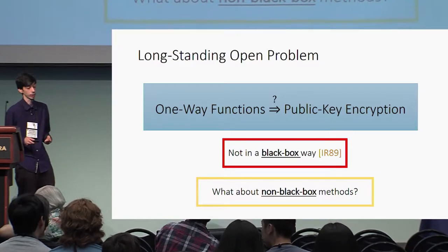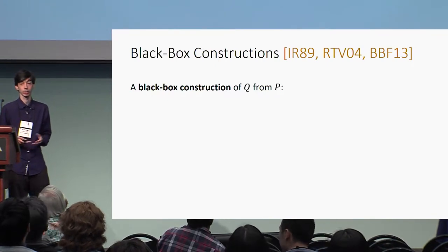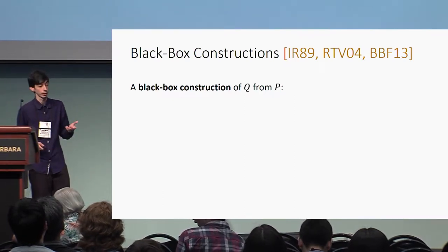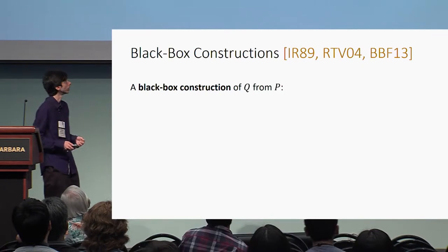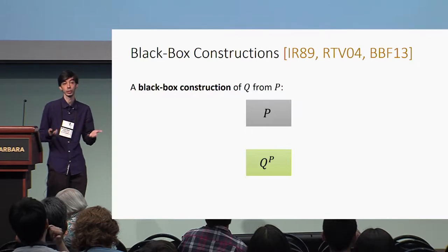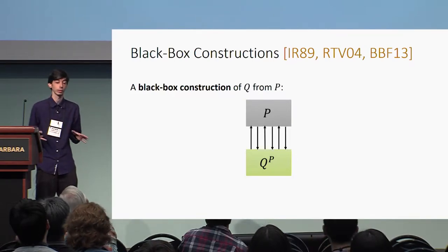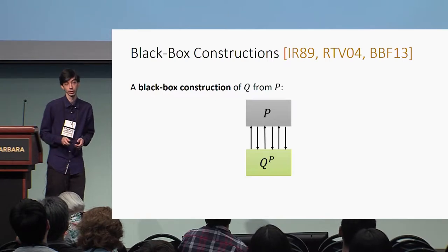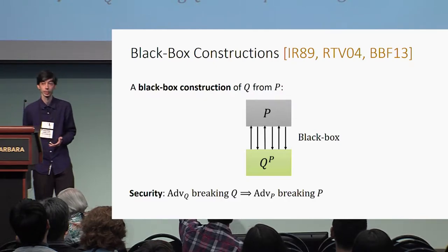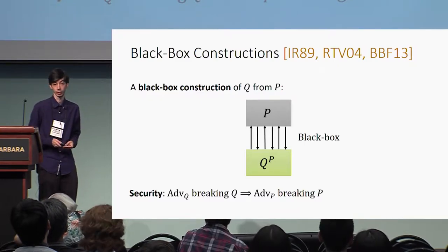Let us briefly define what it means to be black box and non-black box. The standard notion of black box construction was introduced by Impagliazzo and Rudich and later formalized in subsequent works. A black box construction of a primitive Q from another primitive P is where the construction Q only uses P as an oracle—it makes oracle calls and receives answers, and cannot use the code or description of P in its construction. The security requirement says that any adversary that breaks Q can be turned into an adversary that breaks the underlying primitive P.